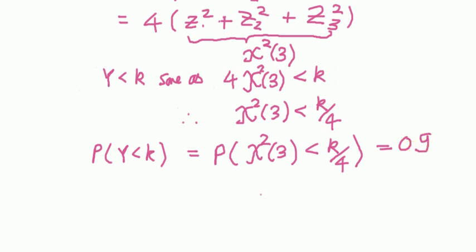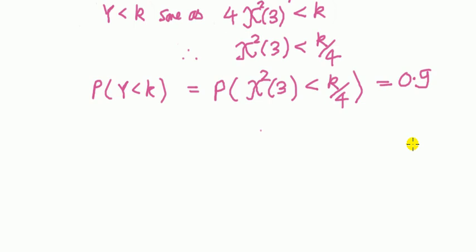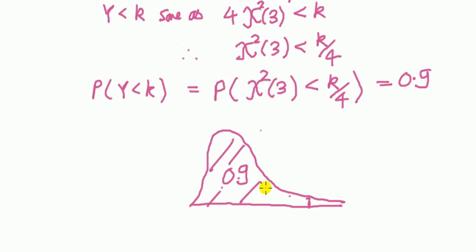You have to follow what I've just done there. The rest is simple. This tells us that we need not the normal table, but the chi-squared table with 3 degrees of freedom. We know chi-squared is positively skewed. k over 4, and we want a point such that the area to the left of it is 0.9. 0.9 is most of the area, so we are far down here. This to the left will be 0.9.